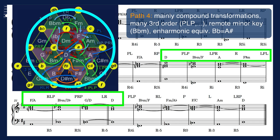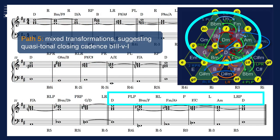The fourth section has a majority of third order compound transformations. We pass through remote minor triads, such as F minor and Bb minor. I also used the anharmonic equivalence between Bb and A sharp. Finally we stay in the upper zone with a mix of transformation types, and suggesting a quasi-tonal closing cadence from the lower third degree through dominant minor chord before landing on the tonic degree major.